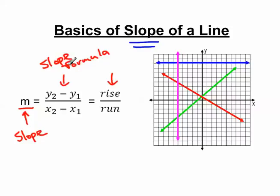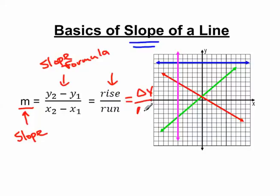I have a separate video that goes over the slope formula, another video that goes over the rise over run equation, and a third video where I solve the same problem using both. I prefer rise over run because it uses less math, but I have students who prefer the slope formula. Ultimately, slope is the change of the y values over the change of the x values. These little triangles here mean 'change in.' We're comparing the y values over the x values.